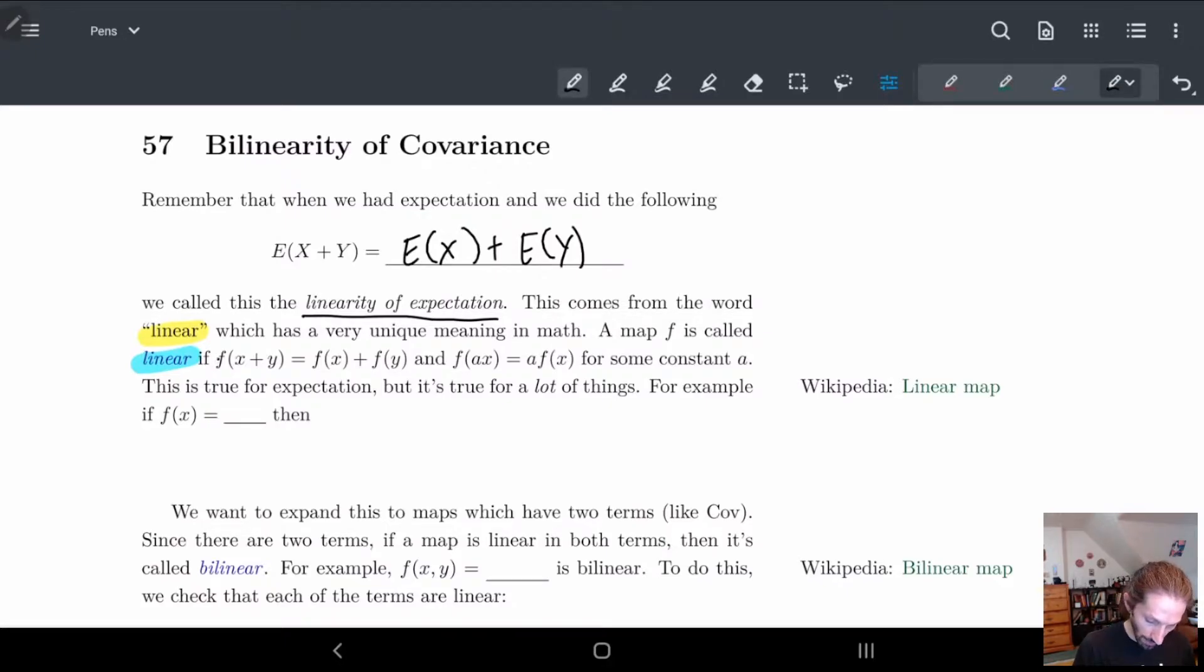So what I mean here is a map f is called linear if it satisfies the following things. We need that f of x plus y needs to be able to split so I can have f of x plus y equal to f of x plus f of y and if I multiply by some constant I need to be able to pull the constant out. And you can kind of see this is true for expectation right like remember how for expectation when we had a x plus b y what we had is a of E(X) plus b of E(Y). I can split my function over the plus and I can bring the constants out in front.